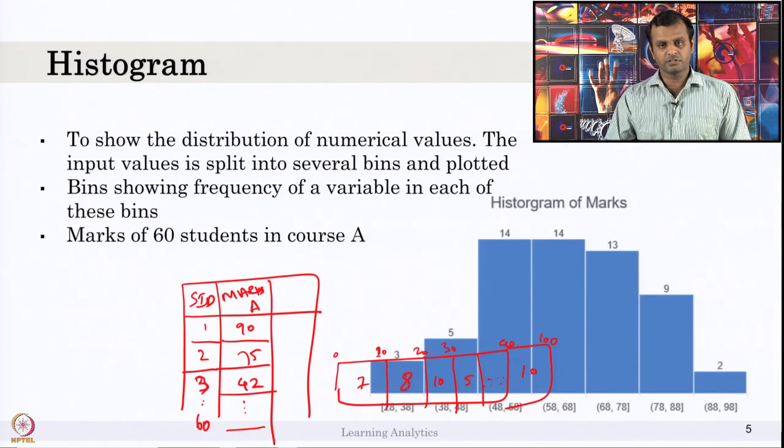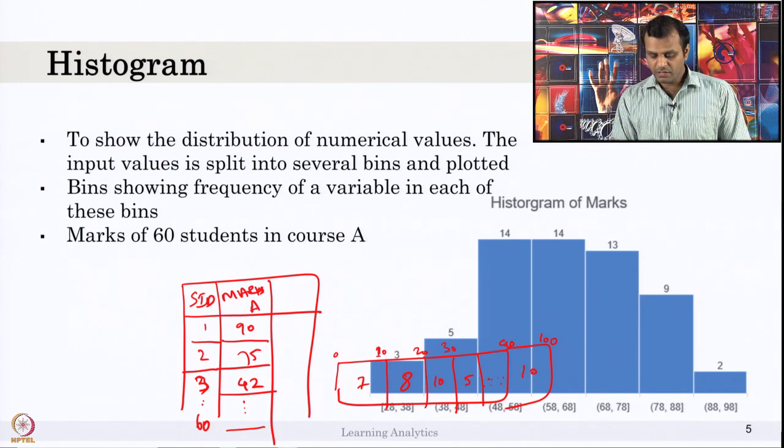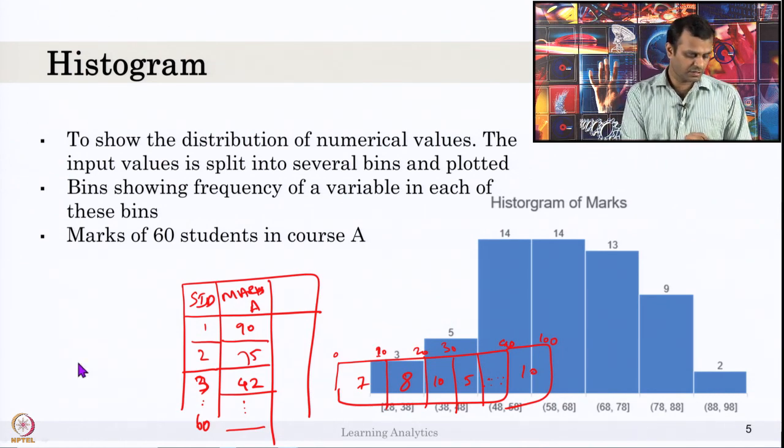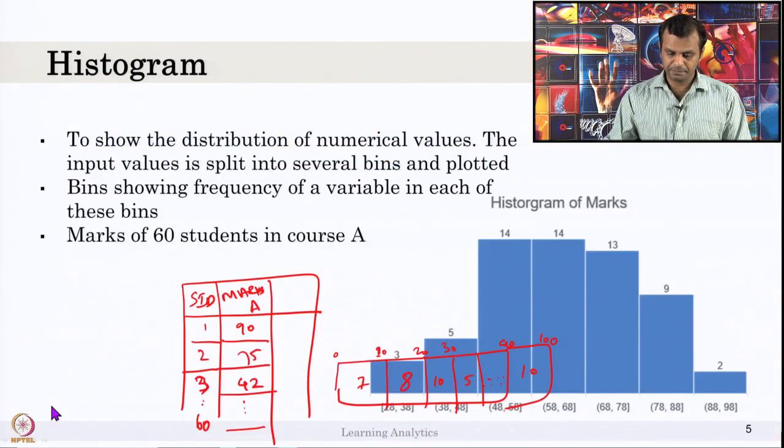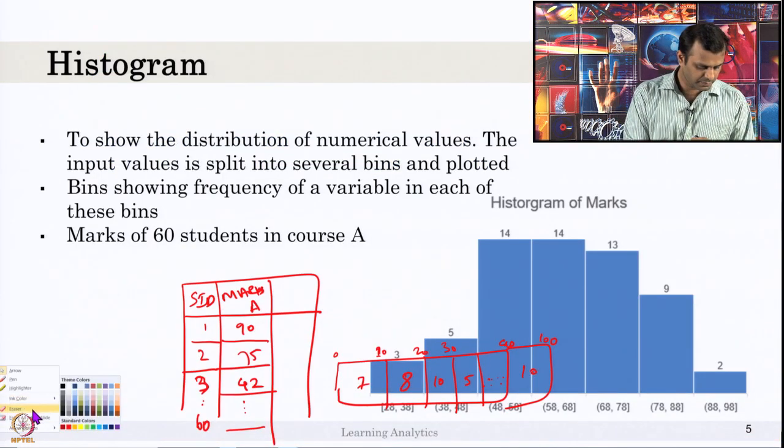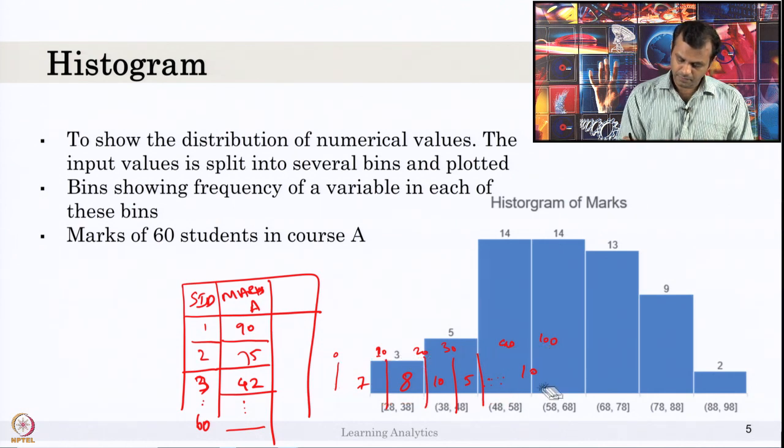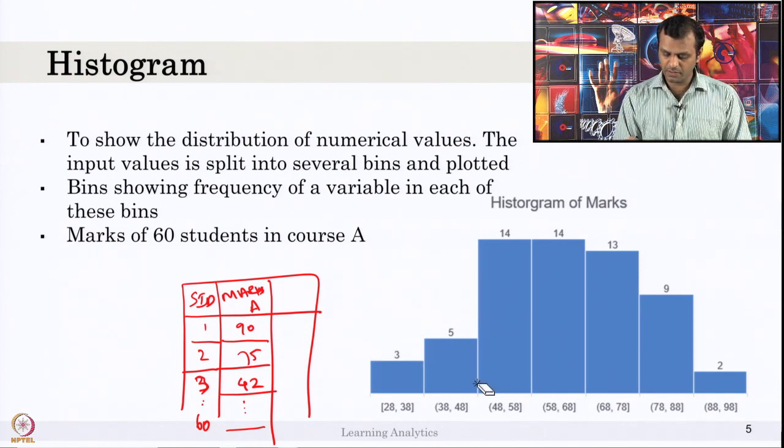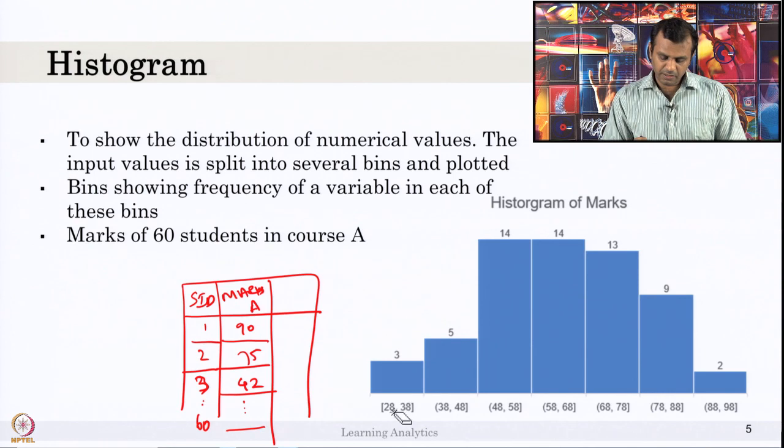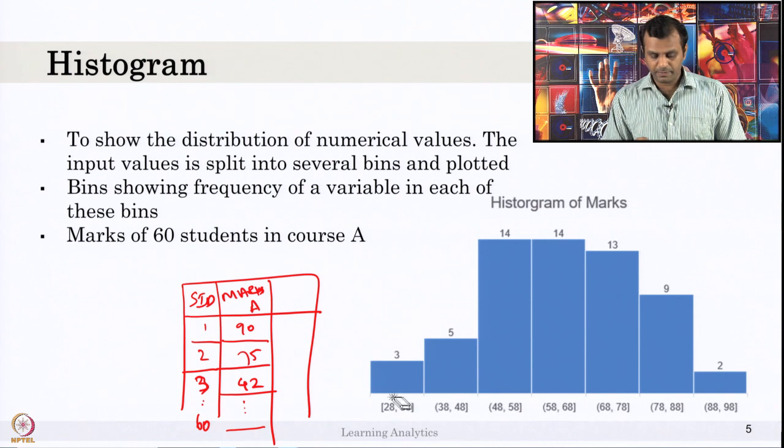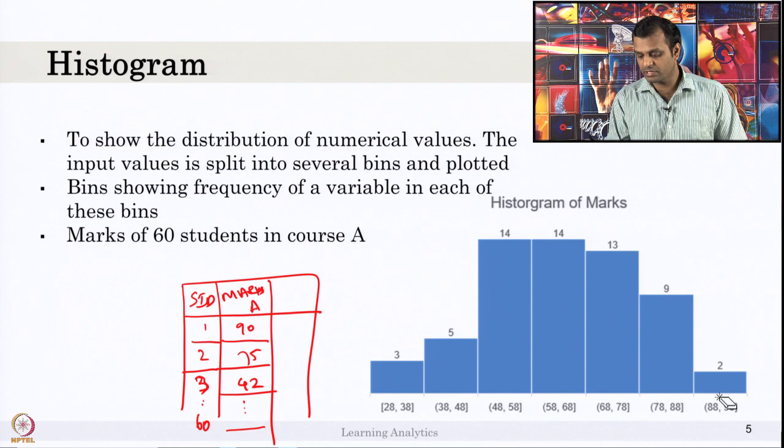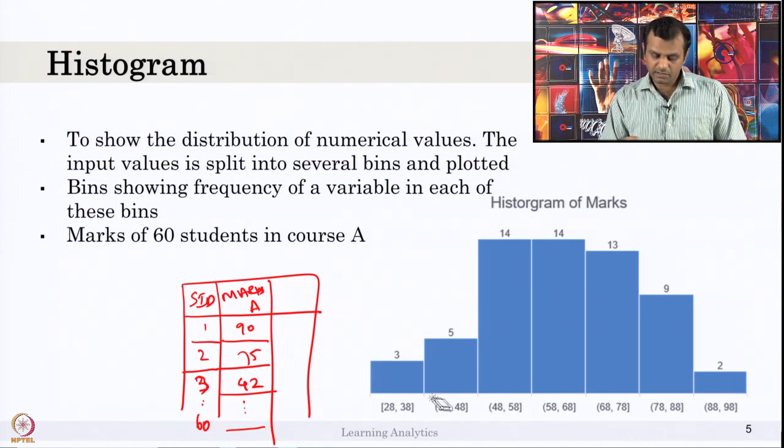Let us see the bins in this histogram. If you look at this, there are like 3 students who got marks from 28 to 38. There are no students below 28 and there are no students above 98. There are only two students who got above 88 and there are 5 students who got 38 to 48.